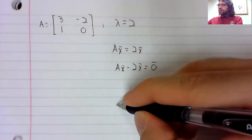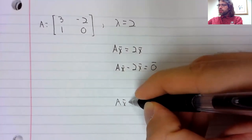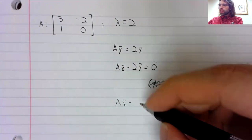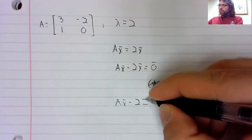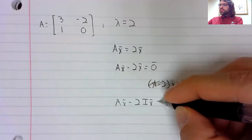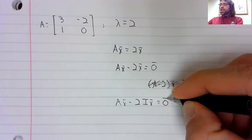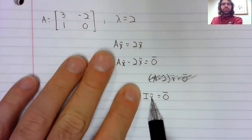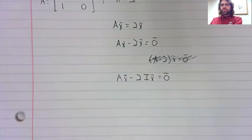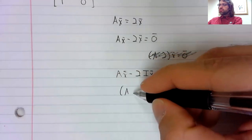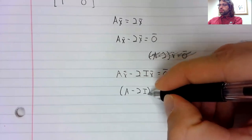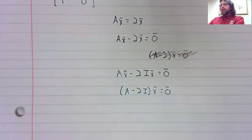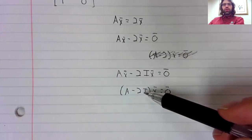So what we do instead is we say, well, x is a matrix. I mean, it's a vector, but a vector is a special kind of matrix. And we can multiply a matrix by the identity without changing it. Throwing an I in here doesn't do anything. I times x is still x. But what it enables us to do is pull out that x. And now we have a matrix equation.